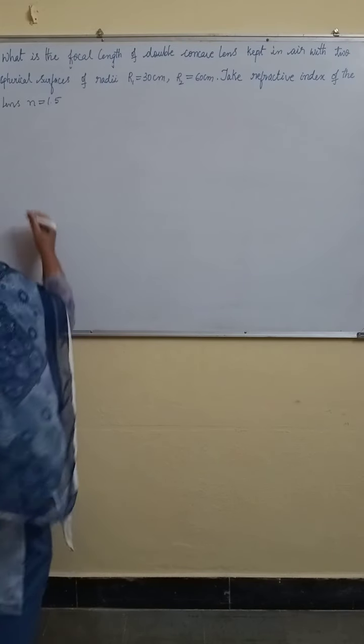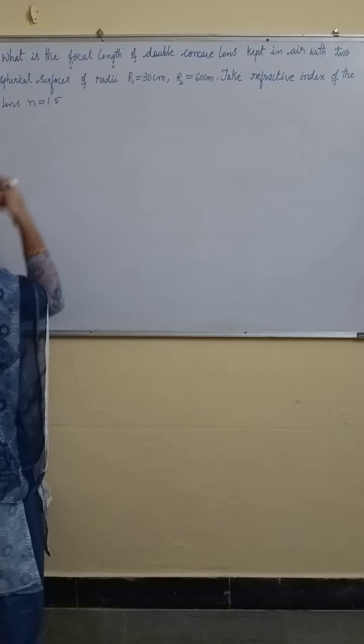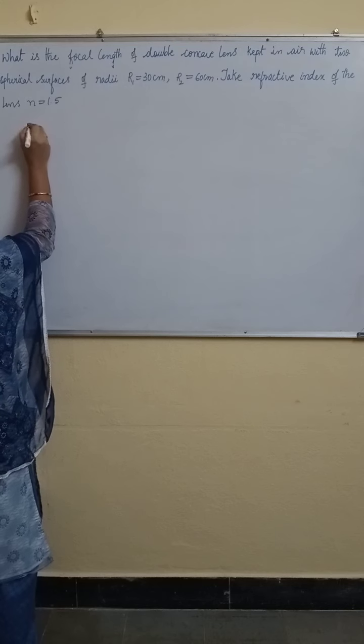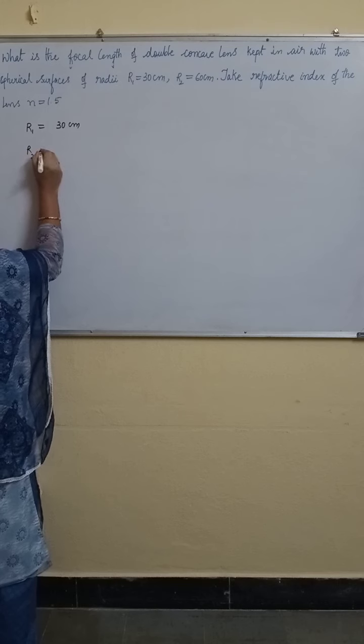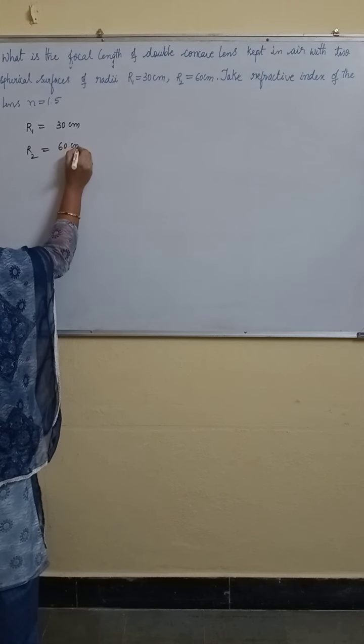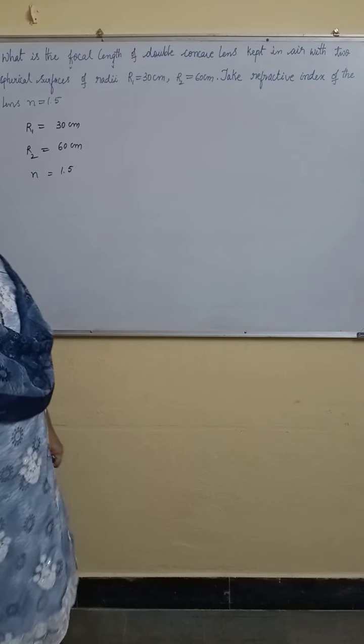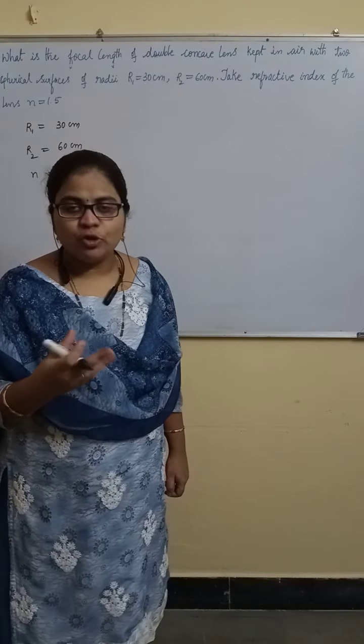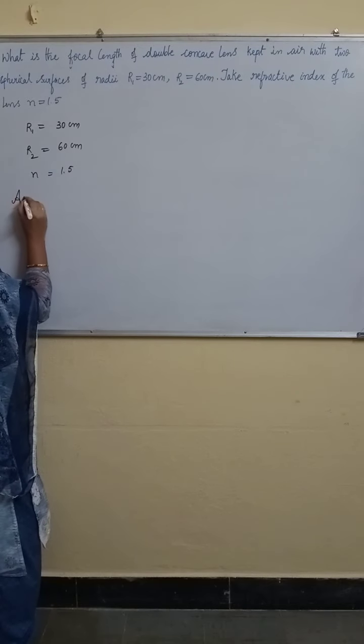So, here according to lens maker's formula. First what they have given? R1 value 30 cm, R2 value 60 cm, N value 1.5. For refractive index, there will be no units because it is a ratio. Now, according to lens maker's formula.